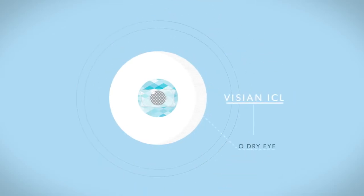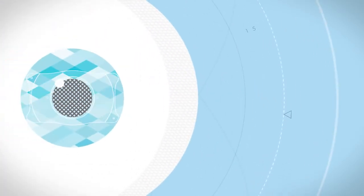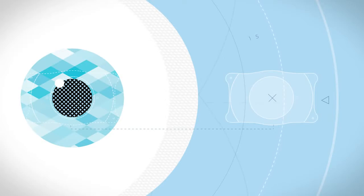With Visian ICL, there's also no dry eye and most people can see immediately after the procedure. LASIK is also permanent, whereas with the Visian ICL, the implant can be removed should you need future vision procedures.